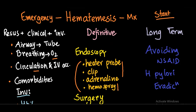If the patient has variceal bleeding, give EVL — endoscopic variceal ligation. If this fails, go for balloon tamponade. And if that fails, you have to go for TIPS — transjugular intrahepatic portosystemic shunt.